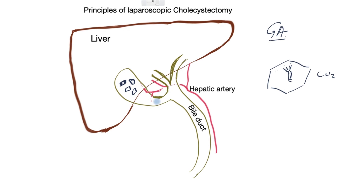The principle involves the surgeon isolating the cystic duct — the tube that connects the gallbladder to the bile duct — and isolating the artery, in order to safely clip and divide these structures. The surgeon inserts instruments to pull the gallbladder in two directions to stretch this area, then begins dissection in this plane to isolate these structures.